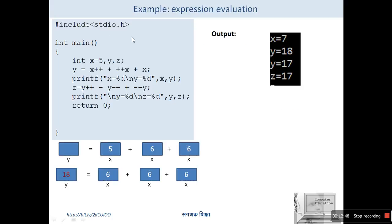Here we take an example for expression evaluation. The value of x is 5, and we evaluate an expression assigned to y. Initially y holds a garbage value. The expression is: y = x++ + ++x + x. We can think of this expression as three parts which are added by the plus operator with left-to-right associativity.